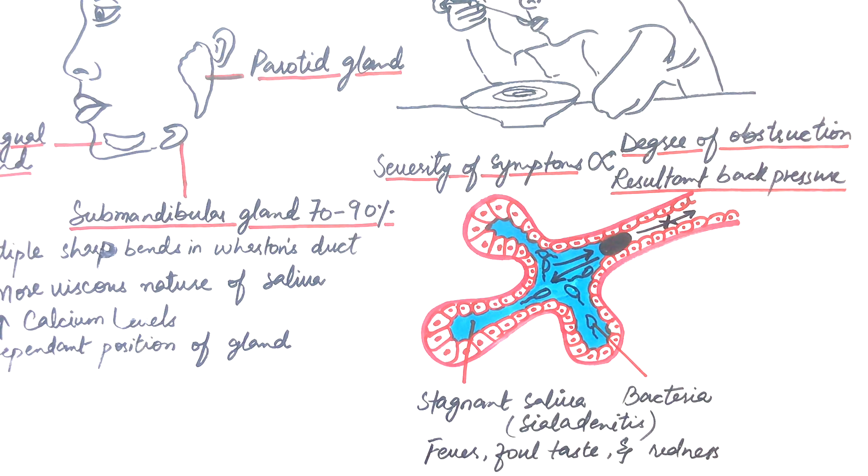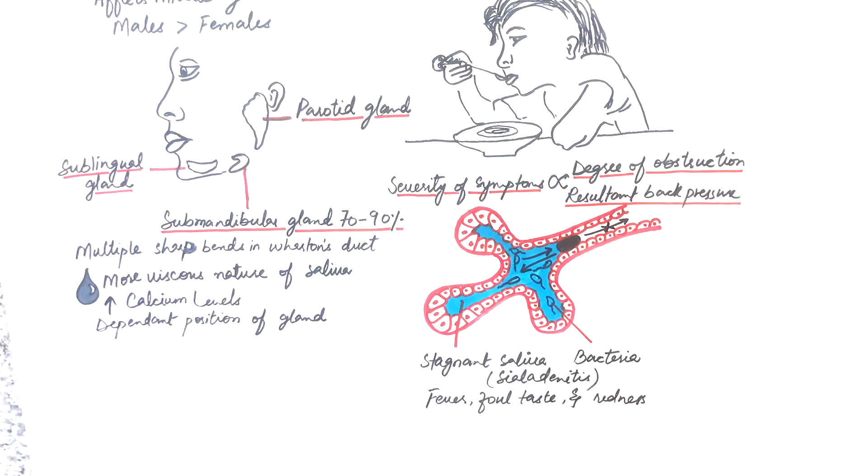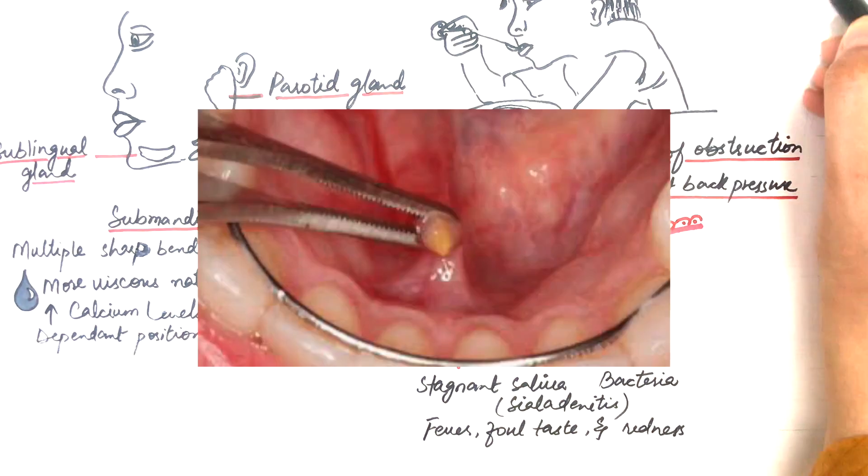If the stone is located towards the terminal portion of the duct, then a hard mass may be palpated beneath the mucosa, just seen in this picture.